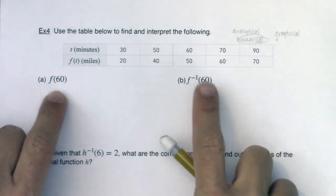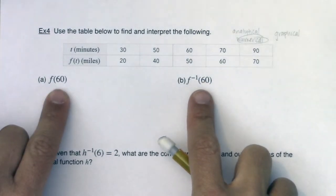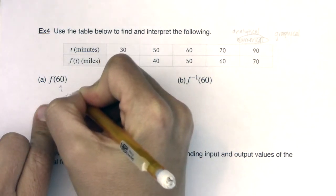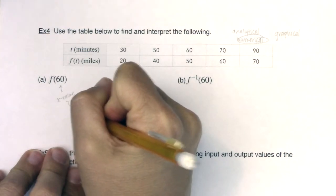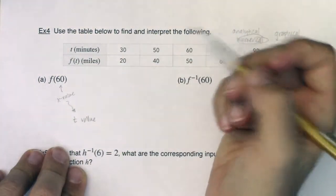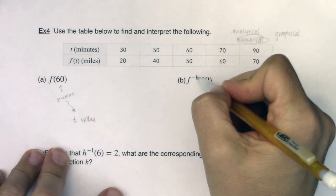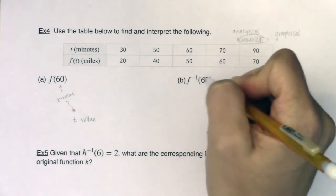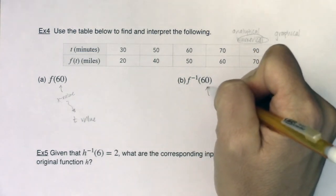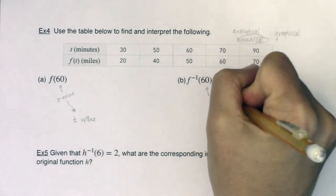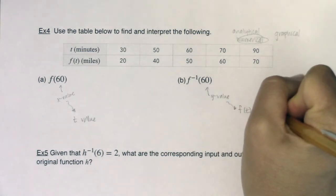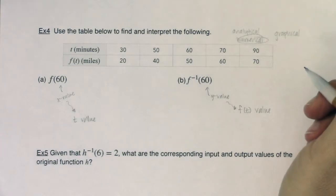Let's compare and contrast f of 60 and f inverse of 60. When you have just your regular old function, the 60 in this case represents an input value — technically a t value, since we're using t and f of t. When we're talking about f inverse of 60, we have to keep in mind that on the inverse side, the x's and y's switch. So this 60 is no longer an input value — it now represents a y value, or for this particular problem, an f of t value.